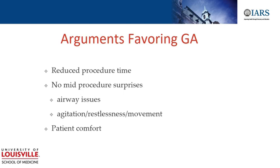Airway is also a concern during these procedures. Given neurologic depression from the stroke, there are varying degrees of how patients manage their secretions, whether they have baseline sleep apnea exacerbated by the stroke, and aspiration is always a concern. These factors lead to intra-procedural interventions requiring airway securement and conversion to general anesthesia. And lastly, everyone cites patient comfort — though this may be more of a provider comfort thing.